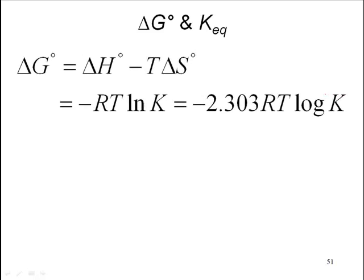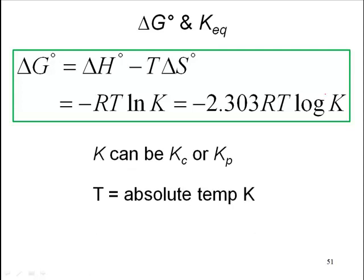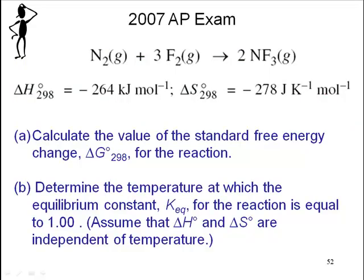How are they related together? Delta G equals negative RT log of K, or negative 2.303 RT log of K. It could be Kc or Kp. T is absolute temperature Kelvin. R is equal to 8.31 joules per mole per Kelvin. And this is an example of a problem that we use for that.